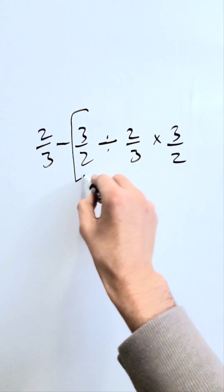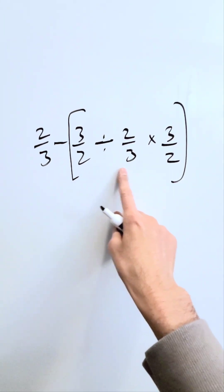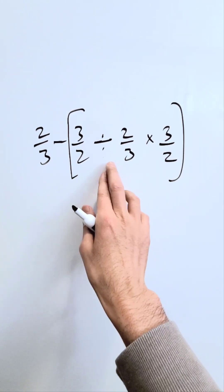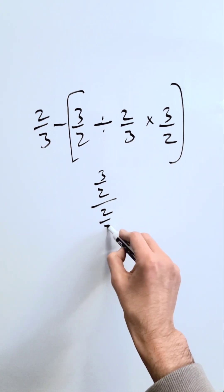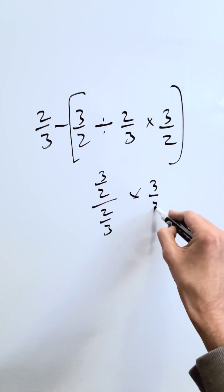You are going to use parentheses just to show that these will take precedence over that division or multiplication. When I'm dividing this I'll have 3 over 2 over 2 over 3 and then I have here times 3 over 2.